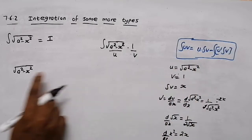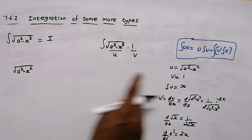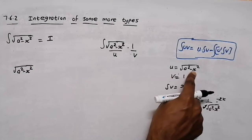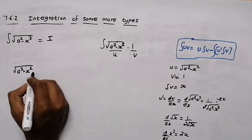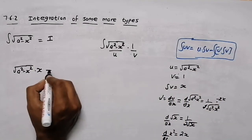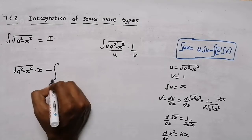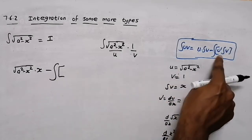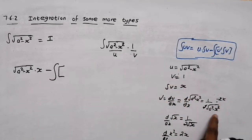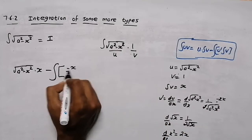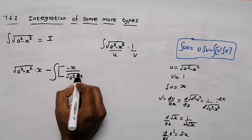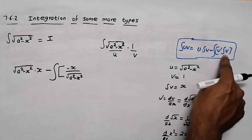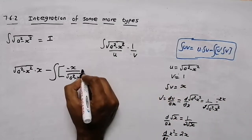So u equals root of a² minus x², and integral v equals x. This is the expression for u-dash: minus x divided by root of a² minus x², times integral v, which is x.